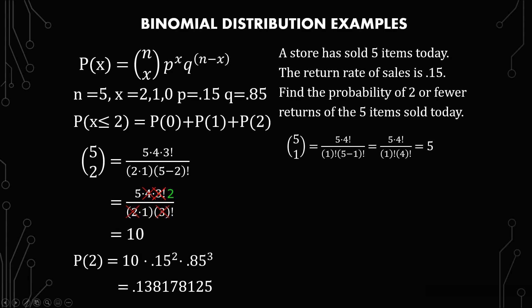So just like last time doing the binomial coefficient in the front, five times four factorial over one factorial times five minus one factorial equals five times four factorial over one factorial times four factorial, which with the fours canceling out, you get five over one, which equals five. You put that in the equation for x equals one or the probability of one, it equals five times 0.15 to the one times 0.85 to the fourth, or 0.391504686.